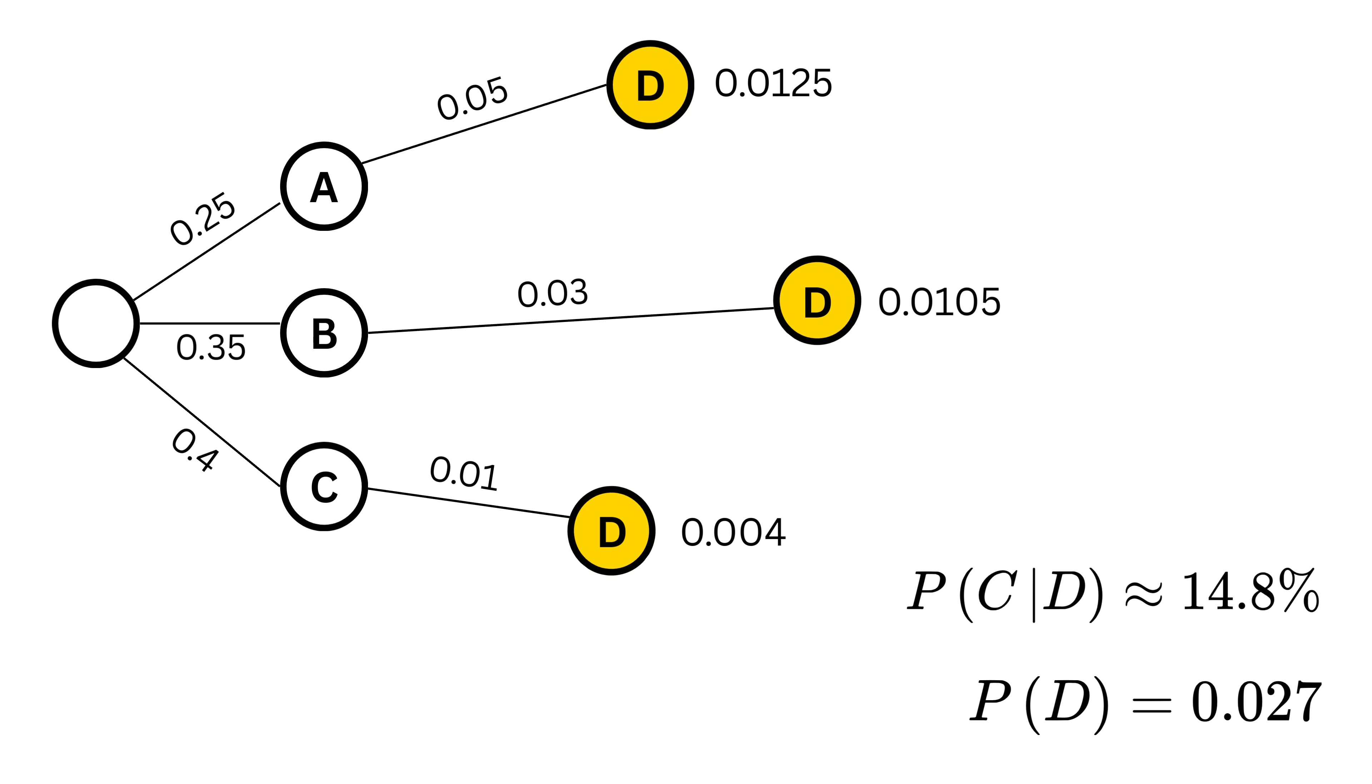Now, just for fun, we will also solve the cases where this defective item actually came from machine A and for B. Now, Bayes' theorem tells us that the chance that the defective came from A is 1.25 divided by 2.7, which is about 46.3%. For B, it is 1.05 divided by 2.7, which is about 38.9%.